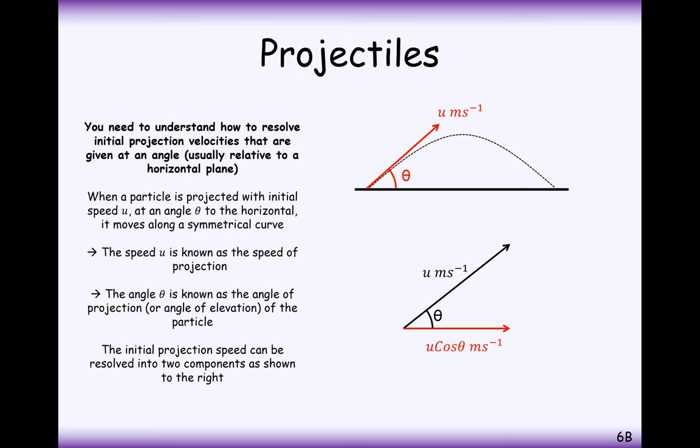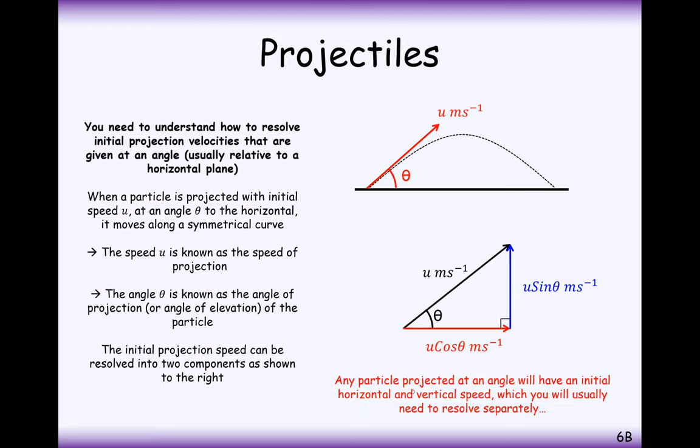Well, what we would do, just the same as with forces, is divide it up into a horizontal component and a vertical component. We know the hypotenuse length, we know the angle on the right angled triangle, so we can work out the horizontal and vertical components of the initial speed. So any particle projected at an angle will have an initial horizontal and vertical speed which we'll usually need to resolve separately.